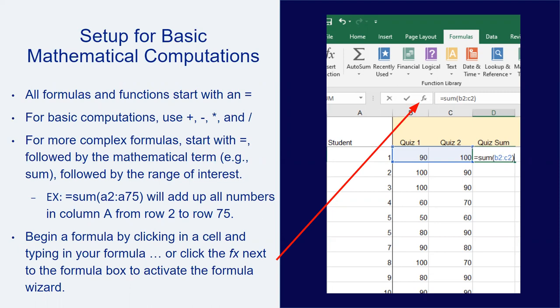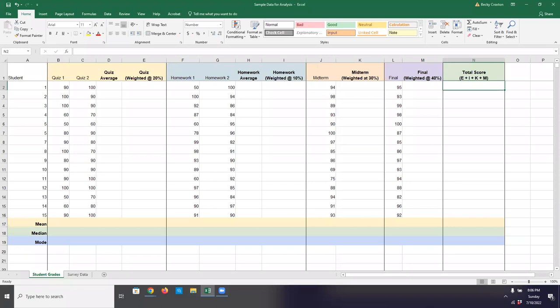Or, once you click in that cell, you can click on the function sign — the F sub X symbol — to the left of the formula box to activate the formula wizard. Let's navigate to the Excel file 'sample data for analysis' and click on the student grades tab. I've set up this little worksheet to show you a few simple computations, and the process for all of these is exactly the same in Google Sheets.